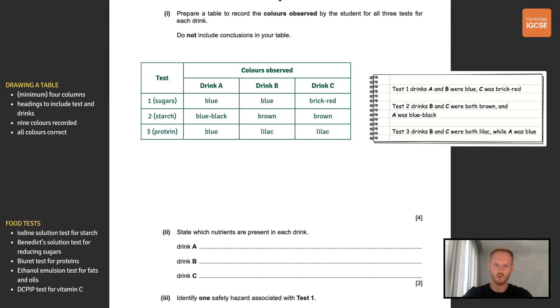Next you need to state which nutrients are present in each drink. So Benedict's solution turns brick red in the presence of reducing sugars, iodine turns blue-black in the presence of starch and biorette reagent turns purple or lilac in the presence of proteins. Therefore we can conclude that drink A contains starch because we got a positive result for test 2, drink B contains protein because we got a positive result for test 3 and drink C contains both protein and reducing sugars because we got a positive result for test 1 and test 3.